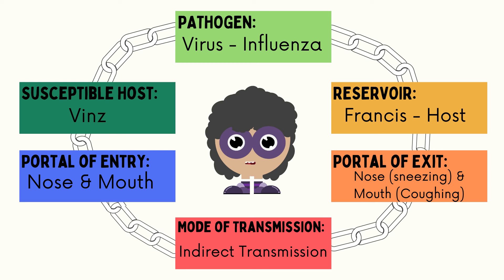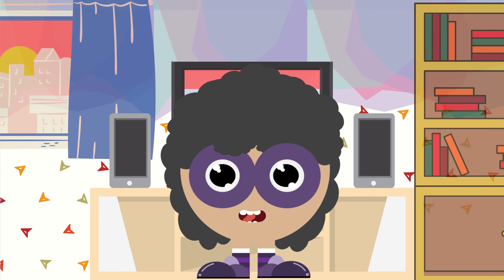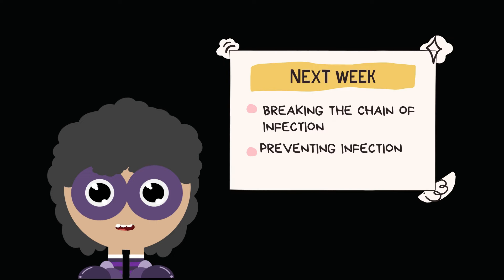Observe that this is actually a cycle — the process may still repeat to other people. Who knows? It can be their mother, father, or other people who have contact with them. After all, we cannot see the pathogens. There may be many ways for communicable diseases to be transferred, but there are also many ways that this can be prevented. So how do we break the chain? We don't want to spoil you because that will be our next week's lesson — we will talk about breaking the chain of infection and preventing the infection.